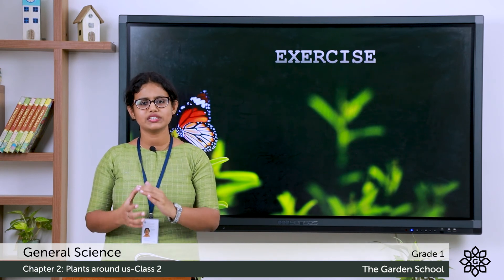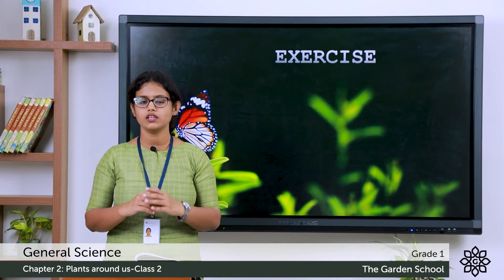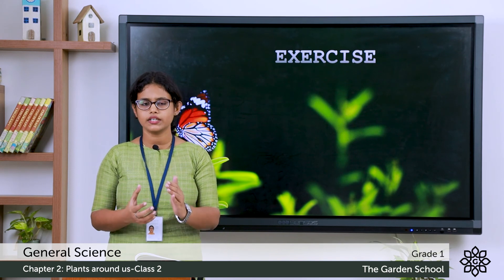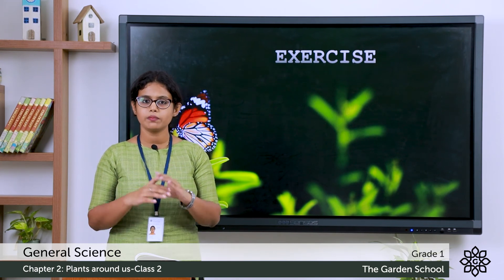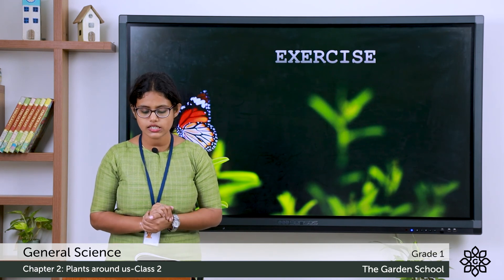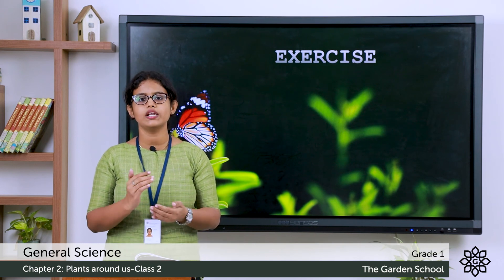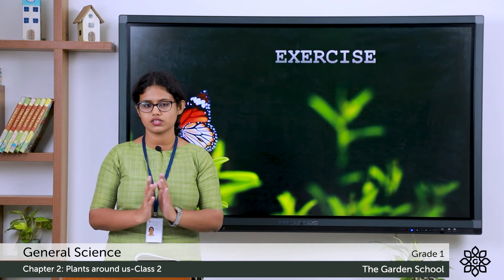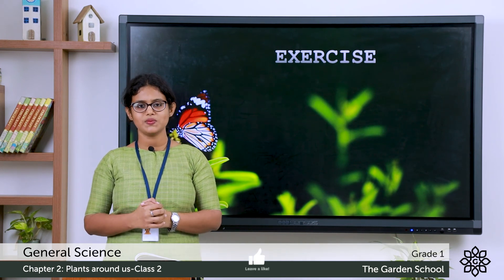The next activity: select any plant and there are 10 questions — tick what is true about your chosen plant. For example, if you take a rose plant: is it a big plant? No. Is it a small plant? Yes — so tick that box. Fill in the answers for all 10 questions. I hope you have learned the second chapter about plants around us. We'll meet in the next class with a new chapter. Bye!